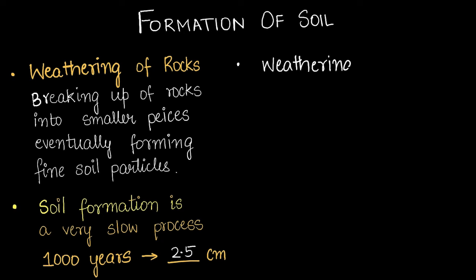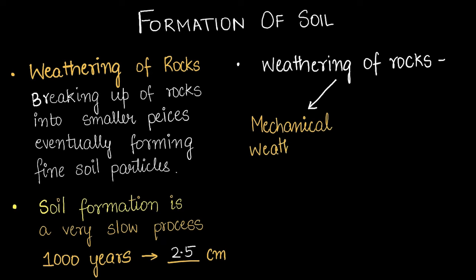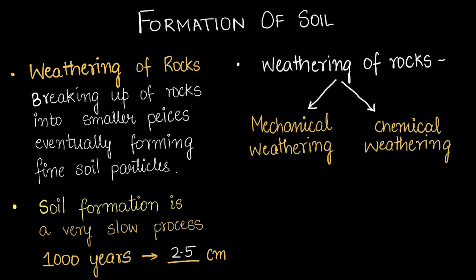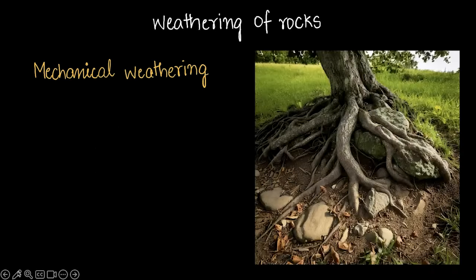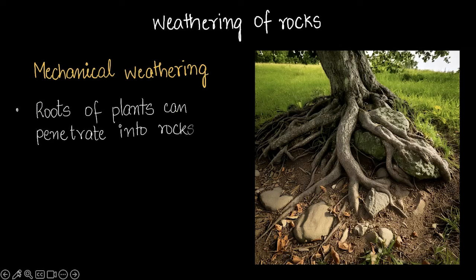The weathering of rocks is divided into two types: mechanical weathering and chemical weathering. Looking at this picture, you can see a tree whose roots have wrapped themselves around a rock. Roots of plants can often penetrate into rocks and cause cracks to form.